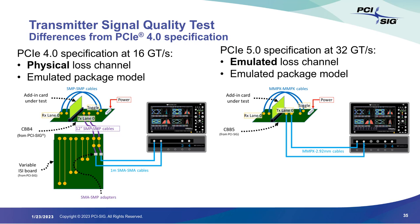The total loss is 26.5 dB, including the physical channel (CBB plus cable loss) and the emulated channel plus package loss. The emulated package loss is provided by the PCIe SIG in the form of an S-parameter file embedded into the scope onto the trace to give the total 26.5 dB loss. A subtle difference from 4.0: with 4.0, a physical ISI board channel was used for signal quality testing, whereas 5.0 uses emulated loss via an S-parameter file embedded on the scope — making testing easier, with less physical connection changes and less prone to user error.